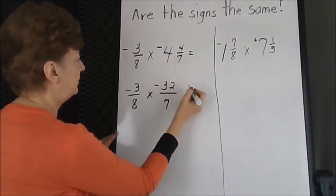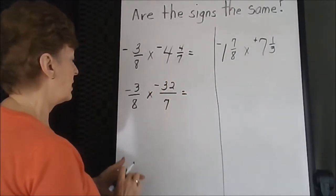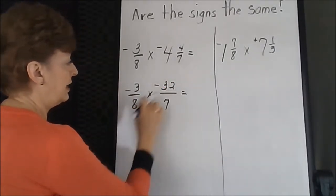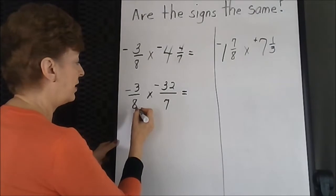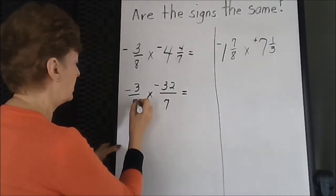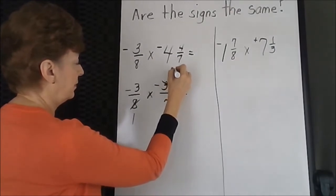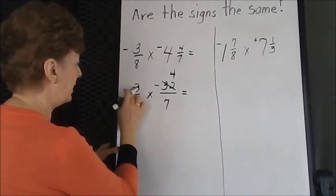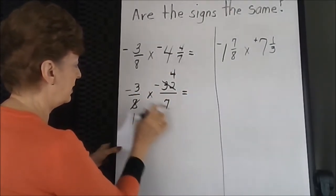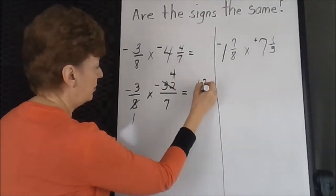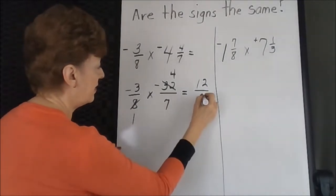Carry the sign. Let's see if we can reduce or simplify. 8 and 32 are both on the eighths lines, so 8 will work. We can't do anything on this diagonal. 3 times 4 is 12.